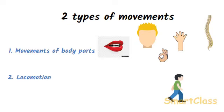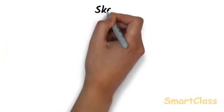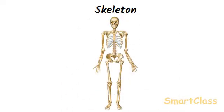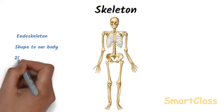To understand how body moves and how locomotion takes place, let us first study the bones present in our body — the skeleton. The bony framework inside our body is called skeleton. Human skeleton is inside the body and hence it is called an endoskeleton. It provides a framework which holds our body together and gives a shape to our body. Human skeleton is made mostly of bones with some cartilage in certain parts. Bones are hard and tough, but cartilage is softer than bones.